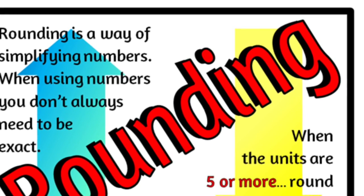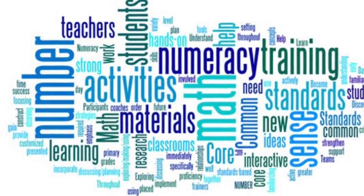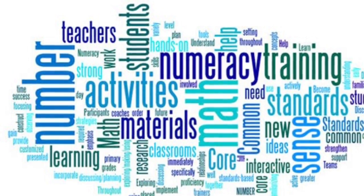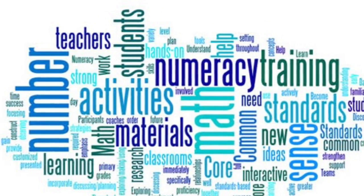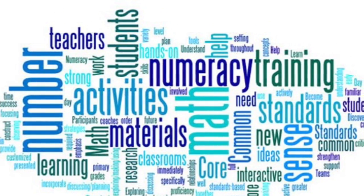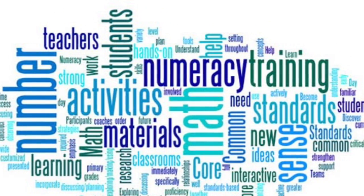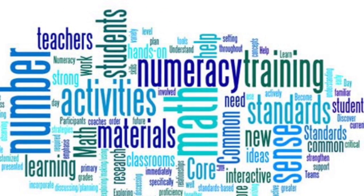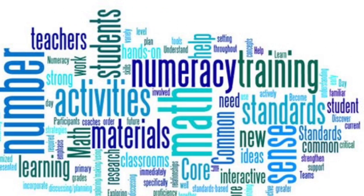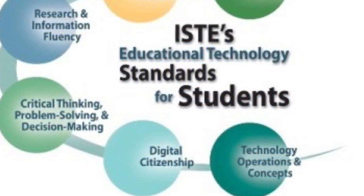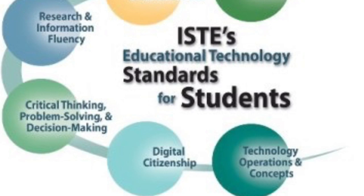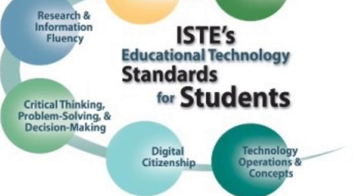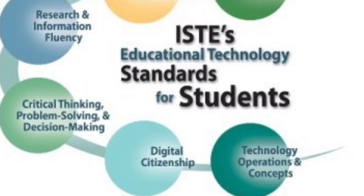Some of the standards addressed in this unit are Common Core State Standards 2.NBT.A.1.A, which covers how 100 can be thought of as a bundle of 10s, and Standard 2.NBT.B.5, to fluently add and subtract within 100 using strategies based on place value, properties of operations, and the relationship between addition and subtraction. One technology standard used is ISTE Standard 4.A — critical thinking, problem solving, and decision making — where students use critical thinking skills to plan and conduct research, manage projects, solve problems, and make informed decisions using digital tools and resources.